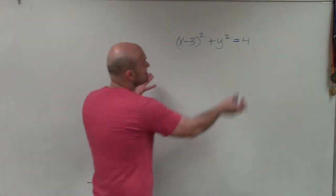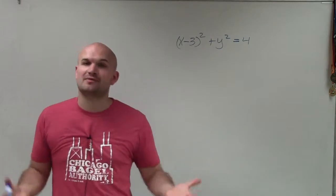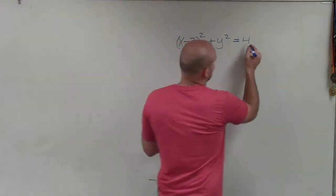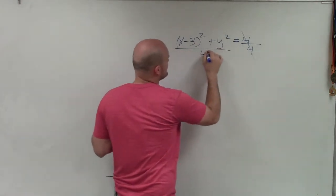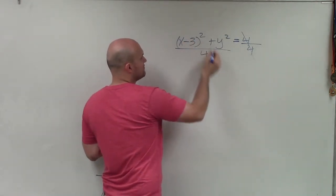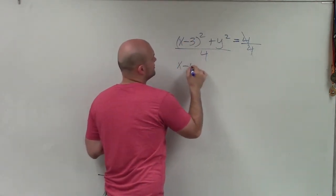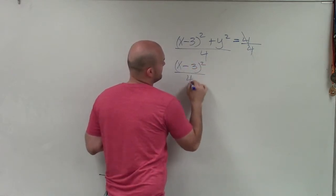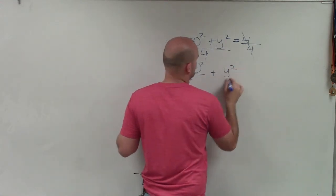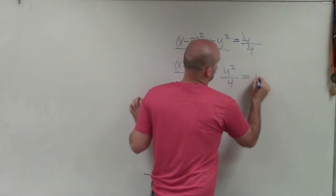Now, the first thing I notice is this equation has to be set equal to 1 for us to be able to find those values. So the first thing I need to do is get this 4 out of the way. I'm going to divide by 4 on both sides. Make sure you divide by 4 into both of these terms. So therefore, I can really write this as x minus 3 squared divided by 4 plus y squared divided by 4 equals 1.